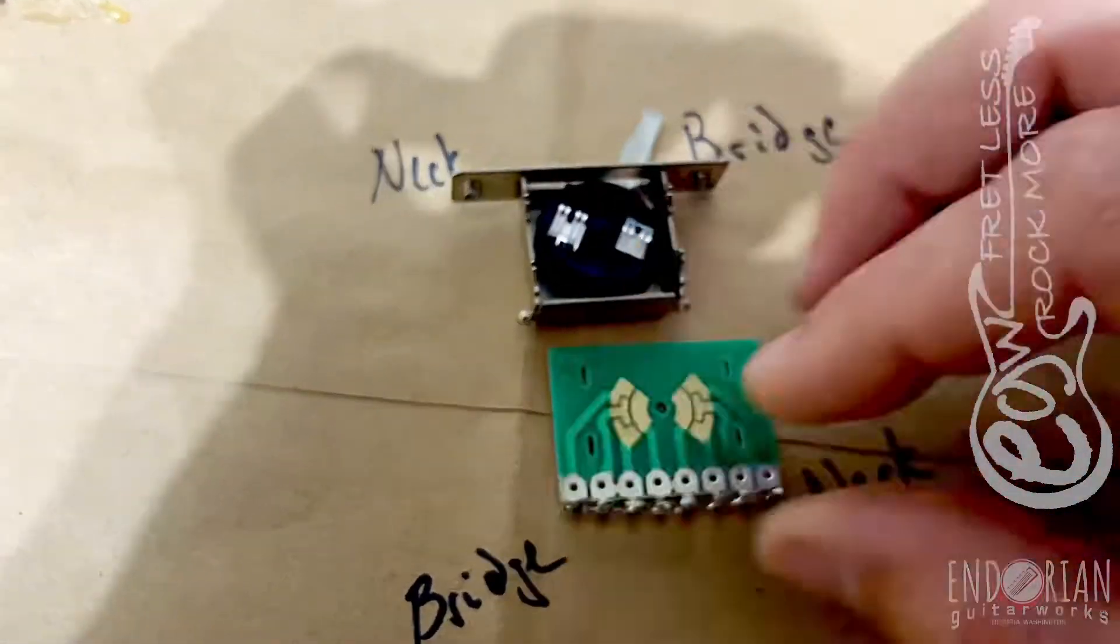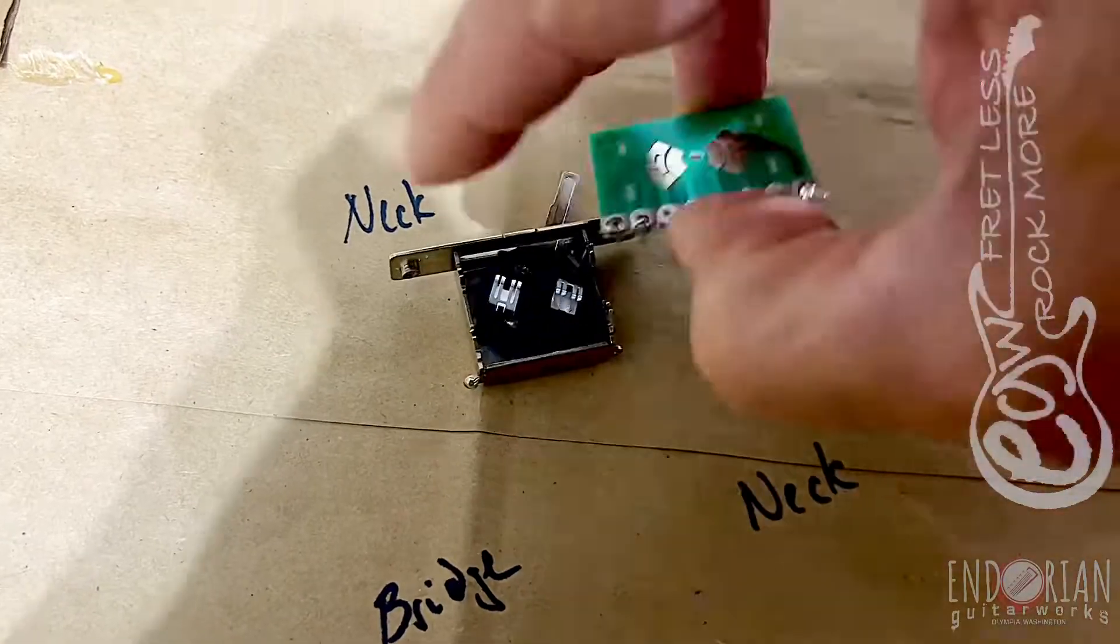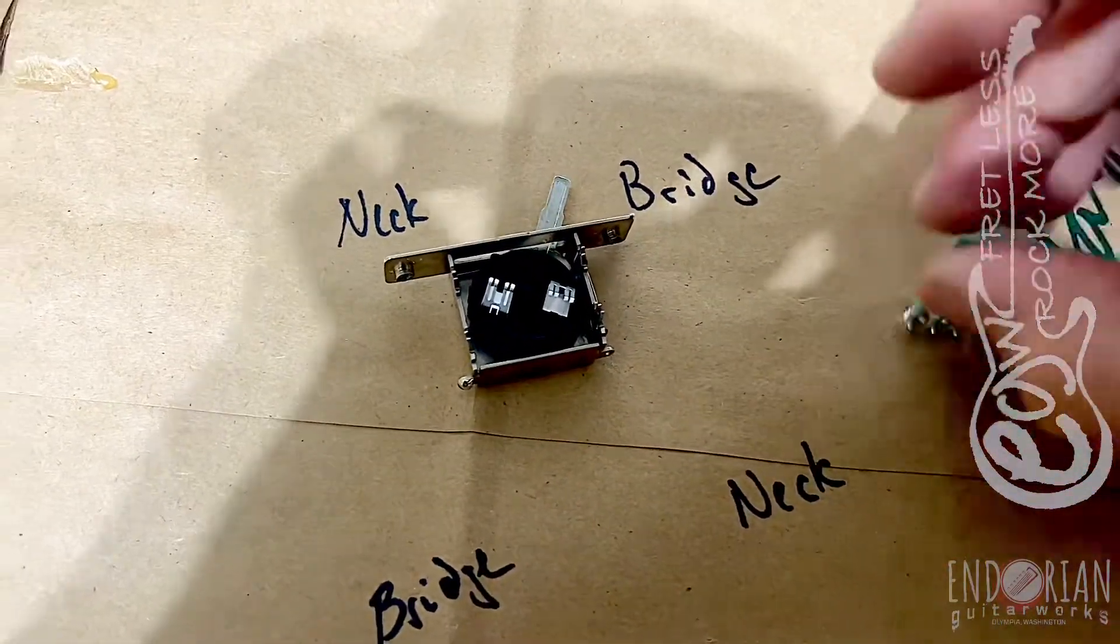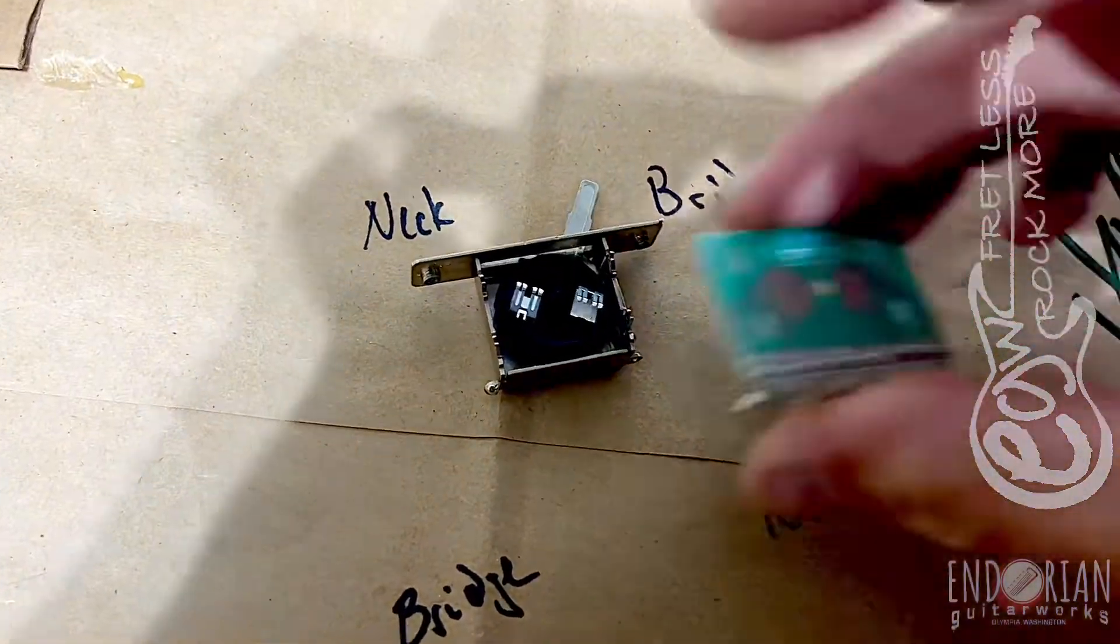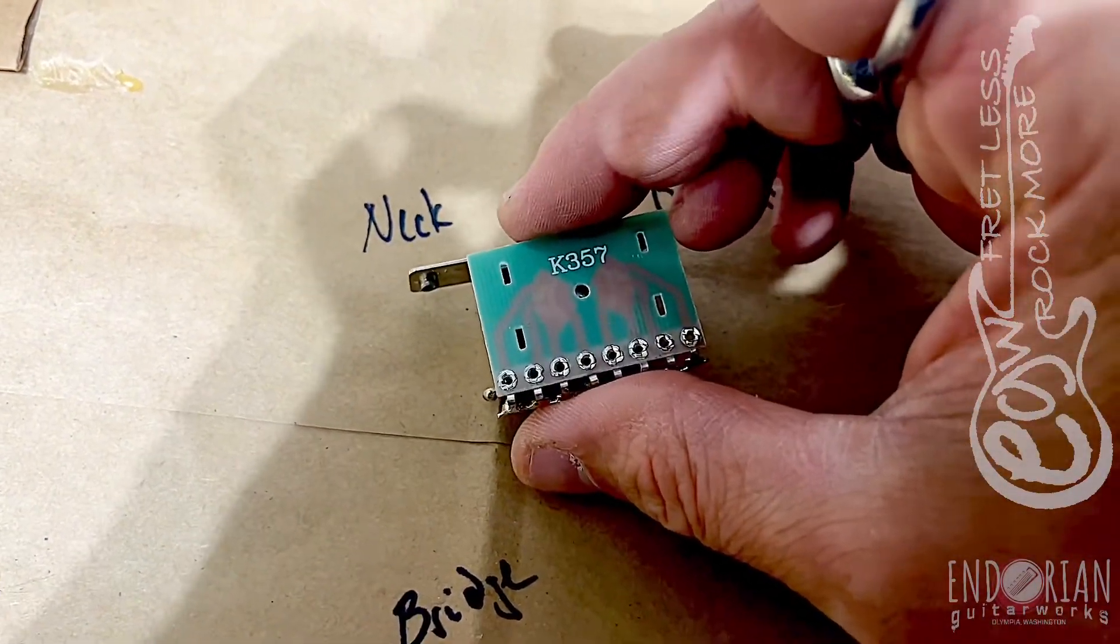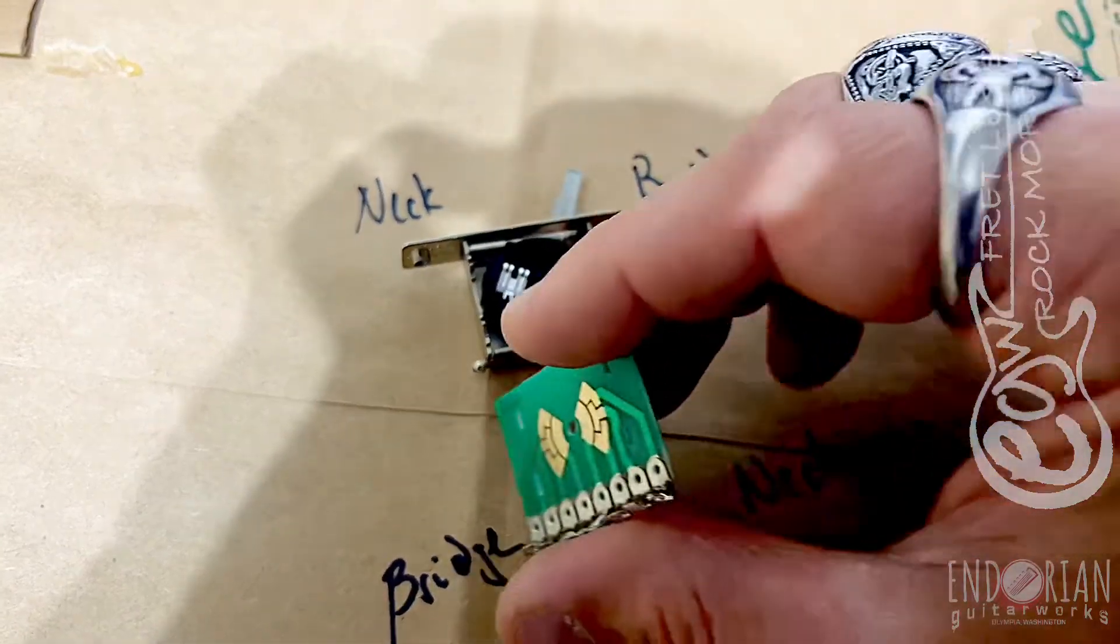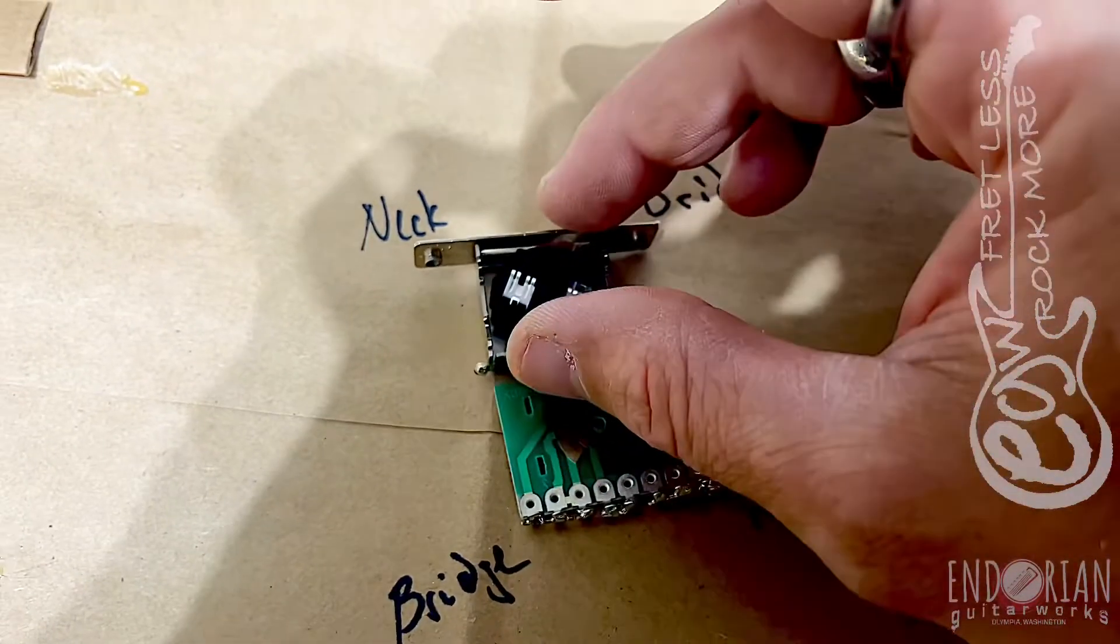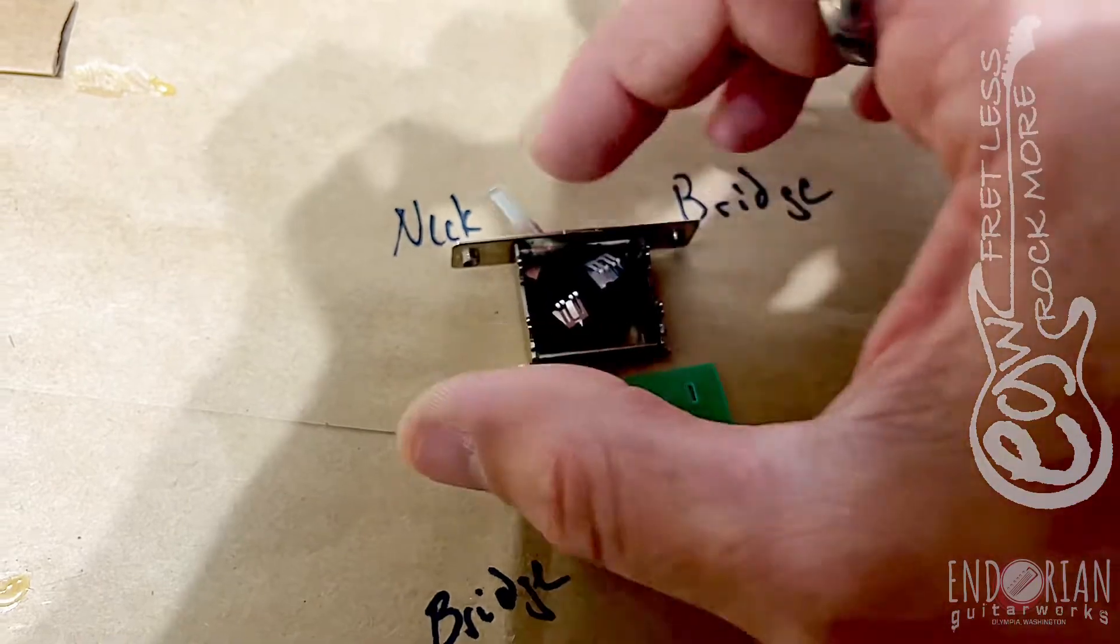I want to get ahead of this. You'll see neck, bridge, bridge, neck, and that's because this is backwards. This works as a casing, so when this is together, this all makes proper contact. But when we split it apart, it's backwards.